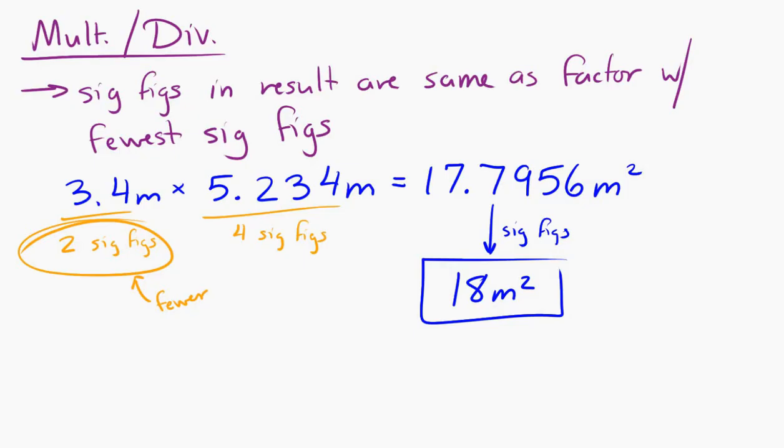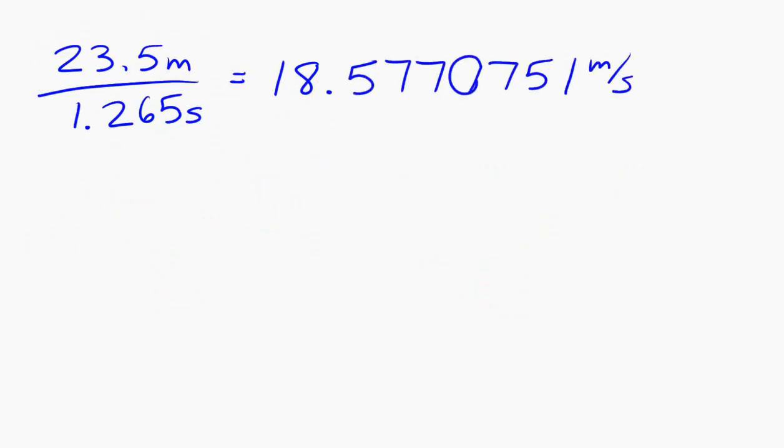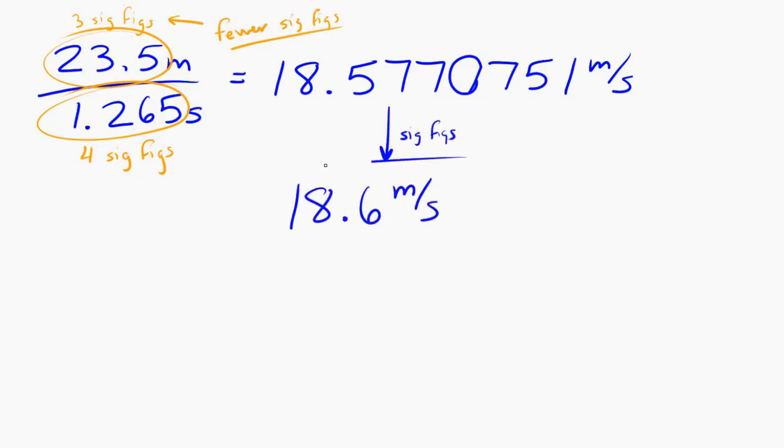Let's take a look at a division example. Let's say we have 23.5 meters divided by 1.265 seconds. Well, you put that in your calculator. You get 18.5770751 meters per second. But that's a lot of digits. We don't really know it out to all of those decimal places. The first number on top has three significant figures. The one on the bottom has four. So we go with the fewer number. We go with three significant figures. If we round that number to three significant figures, we get 18.6 meters per second.